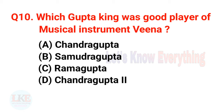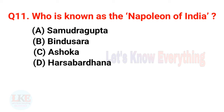Question 10: Which Gupta king was a good player of the musical instrument Veena? Options: A — Chandragupta, B — Samudragupta, C — Ramagupta, D — Chandragupta II. Right answer: option B, Samudragupta, who was a famous musician and very good Veena player. Question 11: Who is known as the Napoleon of India? Right answer: option A — Samudragupta.